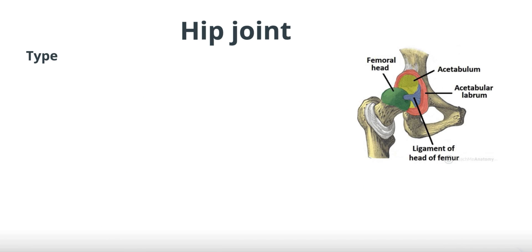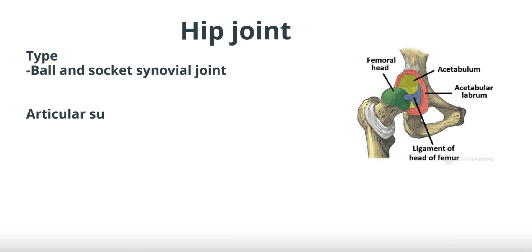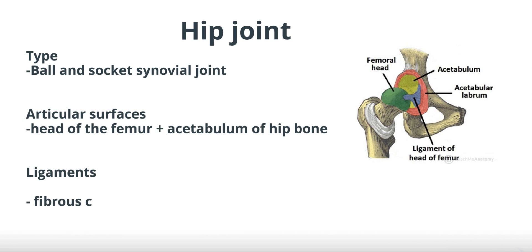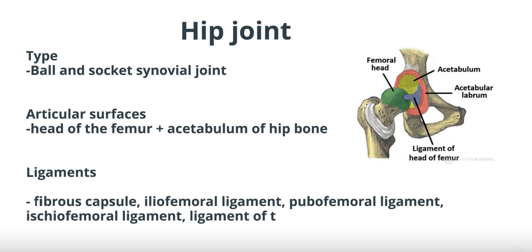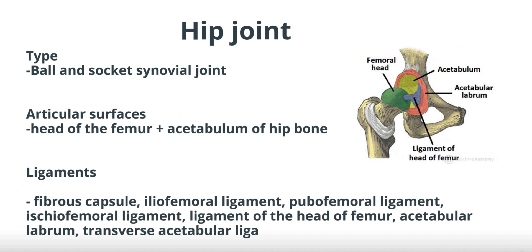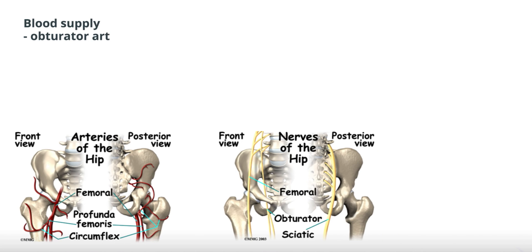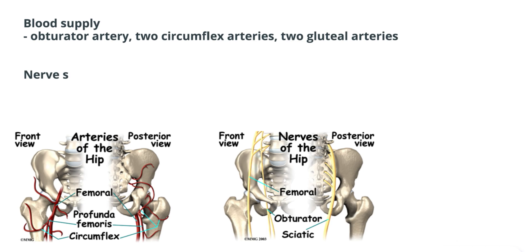The hip joint is a ball and socket synovial joint where the head of the femur and the acetabulum of the hip bone articulate with each other. The ligaments supporting this joint are the fibrous capsule, the iliofemoral ligament, pubofemoral ligament, ischiofemoral ligament, the ligament of the head of the femur, the acetabular labrum, and the transverse acetabular ligament.